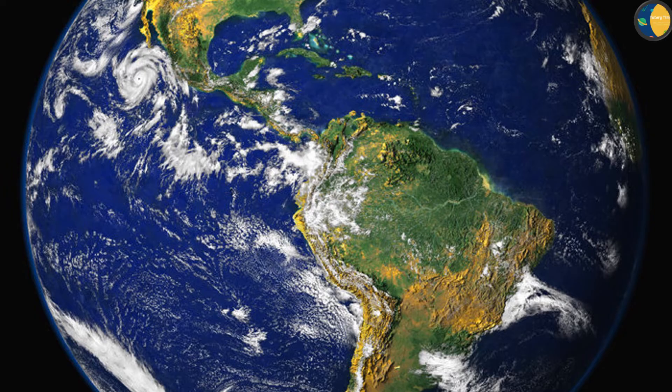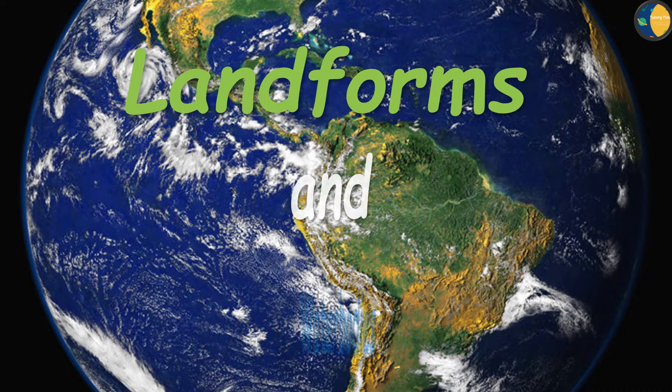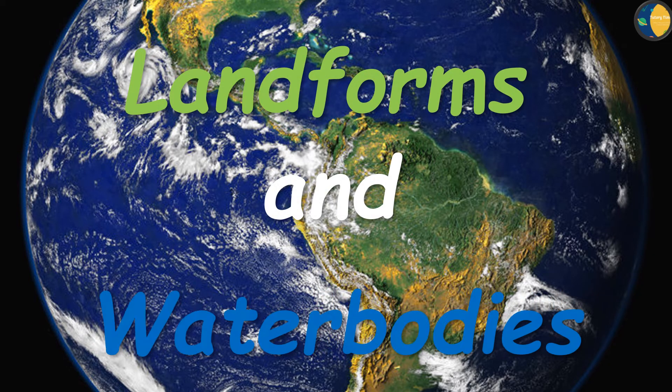We all live on the Earth. It is the home of all living things. The Earth is round in shape. It is made up of land and water. It has one part land and three parts water. The Earth has a thick layer of air all around it. It looks blue from space.